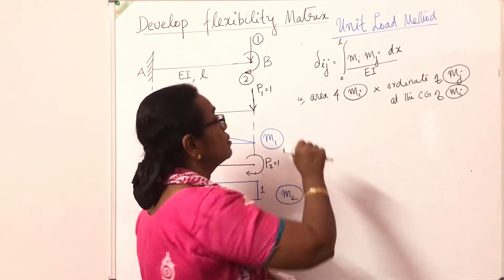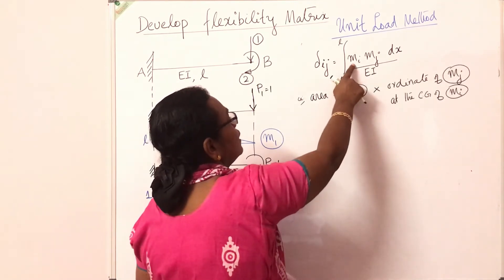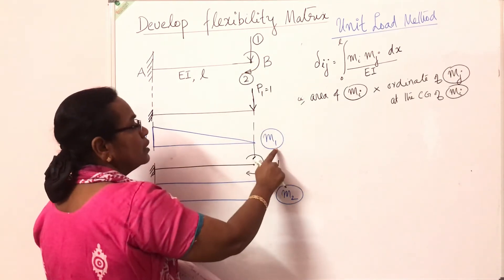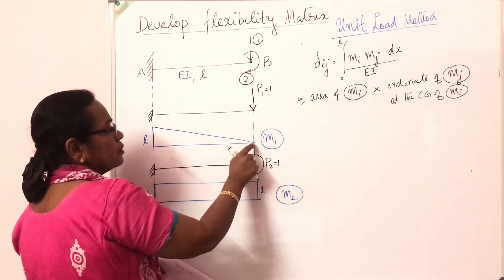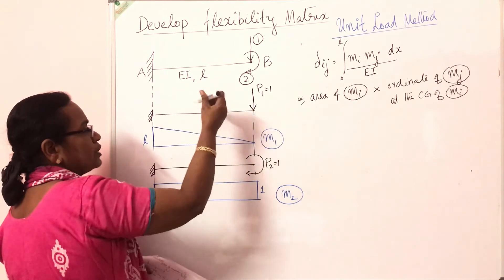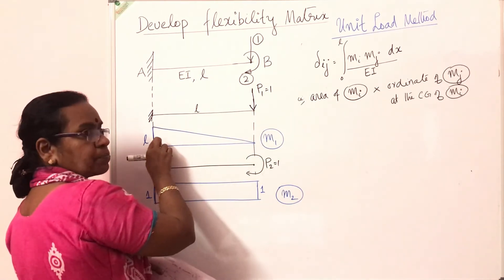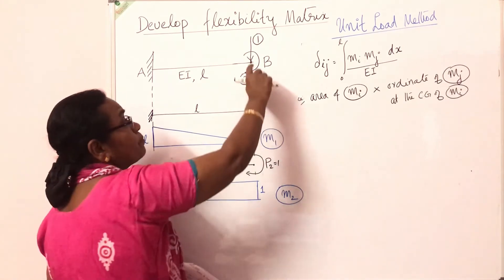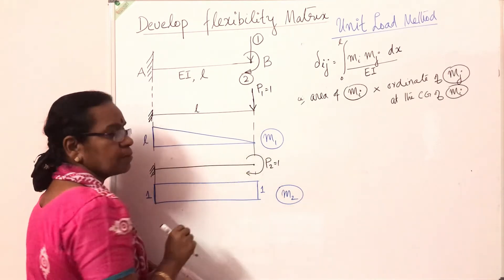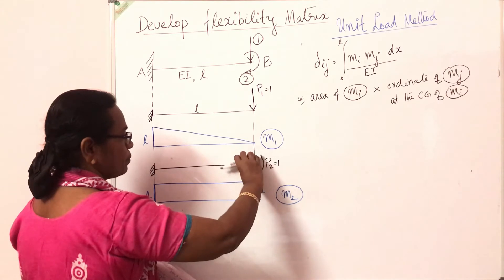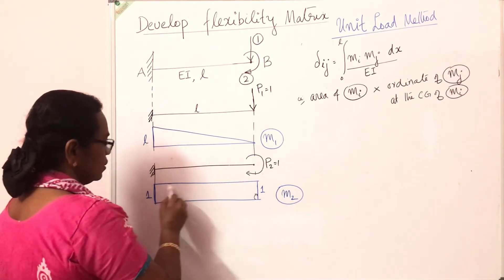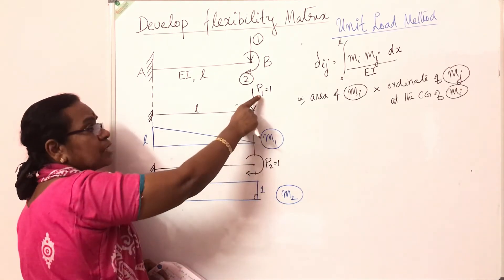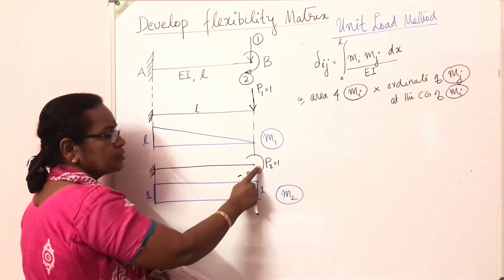In the unit load method, Mi and Mj are the bending moment diagrams corresponding to unit loads in coordinates i and j respectively. For this example with coordinates 1 and 2: applying P1 = 1, the bending moment at the fixed end is 1×L = L (hogging) — this is the M1 diagram, a triangle. Applying P2 = 1 (unit moment at B), the bending moment is 1 everywhere along the beam — this is the M2 diagram, a rectangle of height 1.